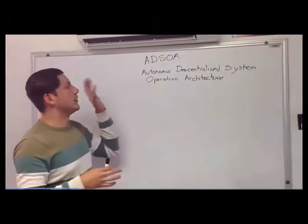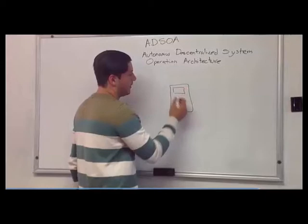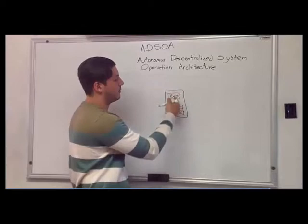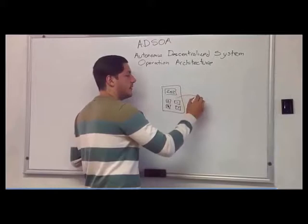I'm going to explain what a decentralized system operation architecture is. We have a calculator, and when you are typing 2 plus 2, in order to have this architecture, all of your data is going to be sent via sockets.